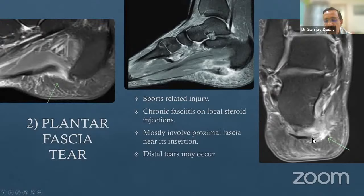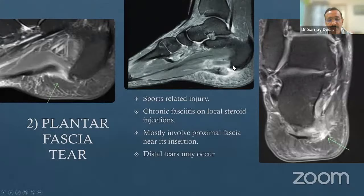On coronal images, the lateral cord, central cord, and medial cord can be individually assessed for tears. Distal tears of the plantar fascia are relatively uncommon because the stress of the single attachment is distributed across the five toes. Most tears occur in the proximal portion of the plantar fascia.